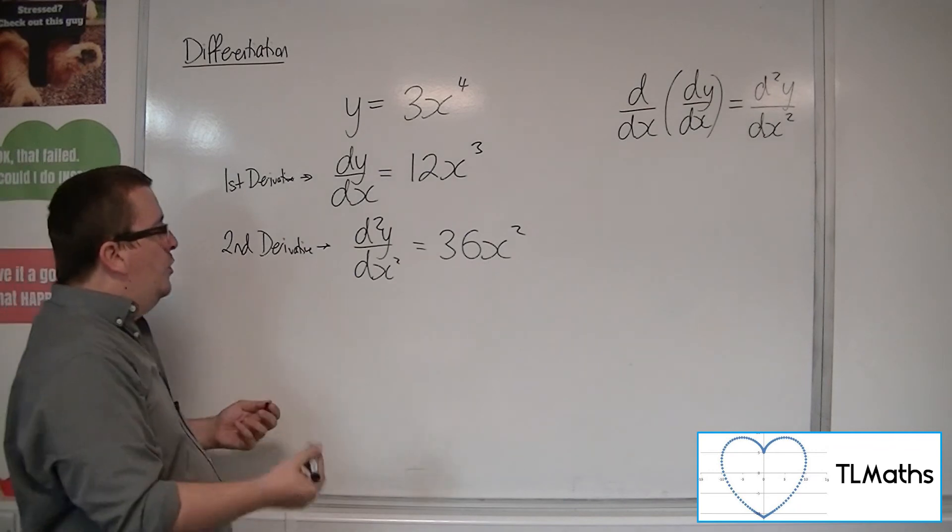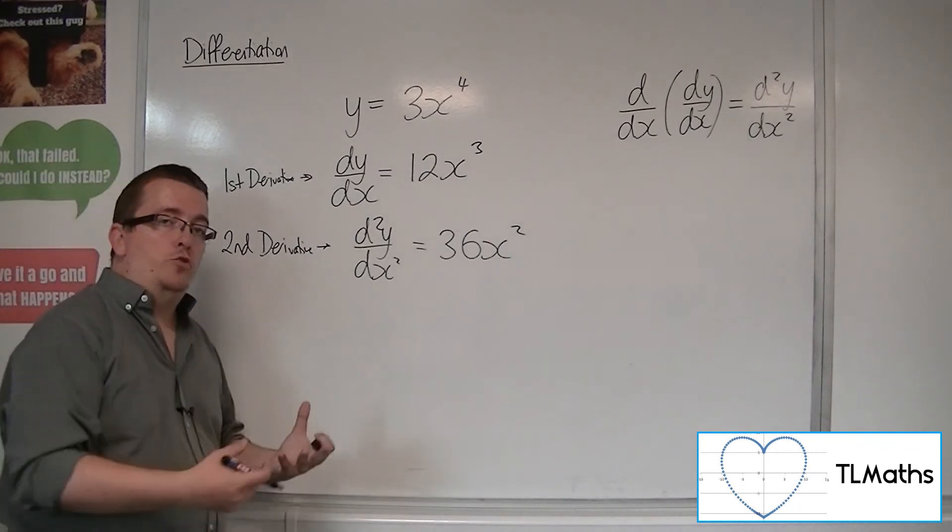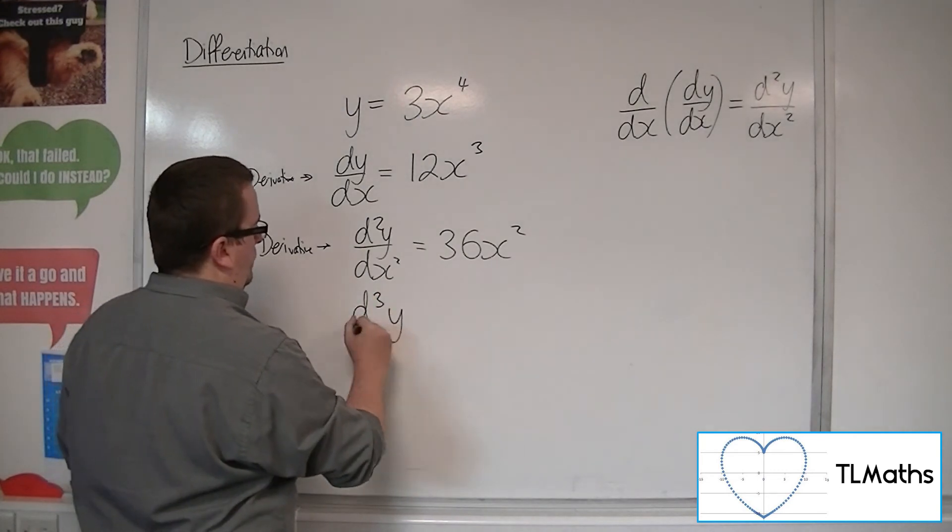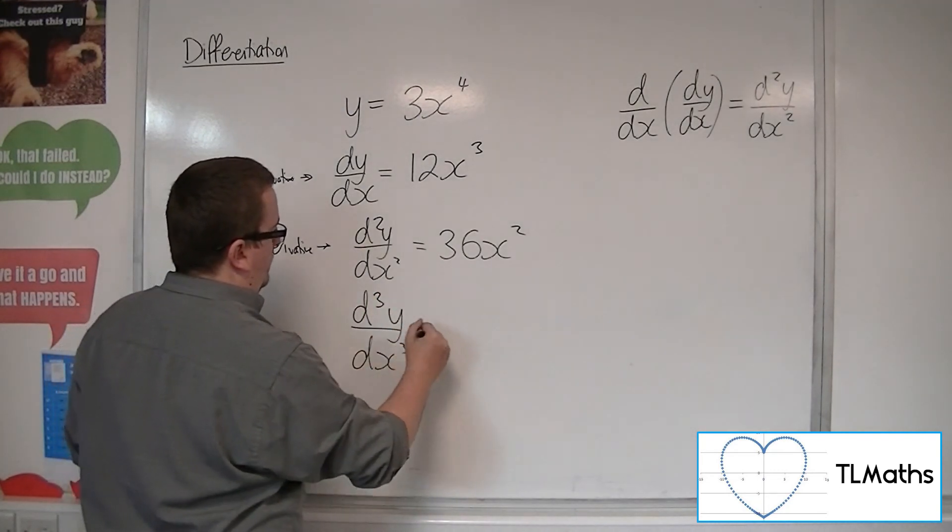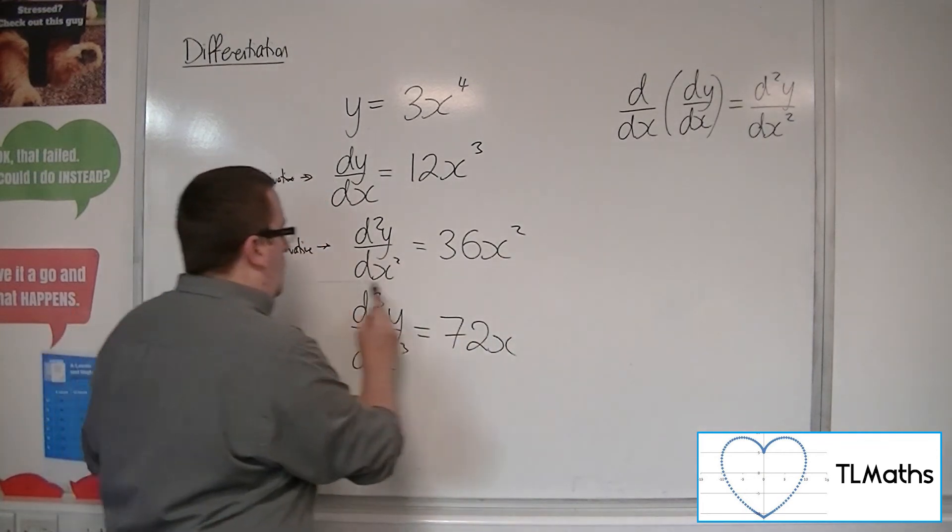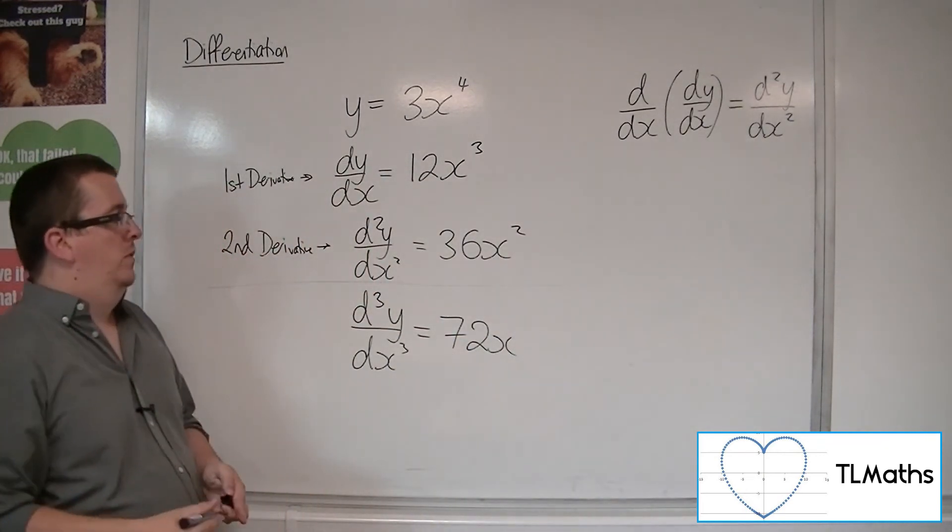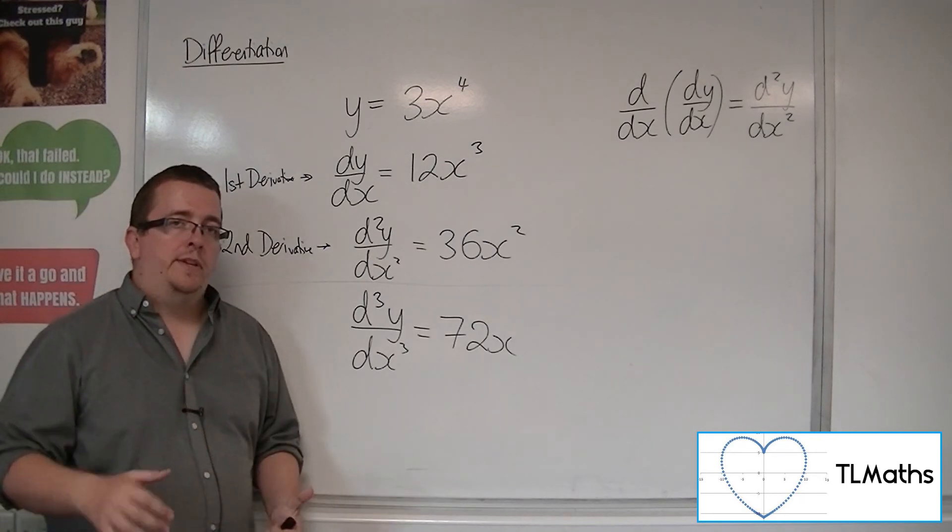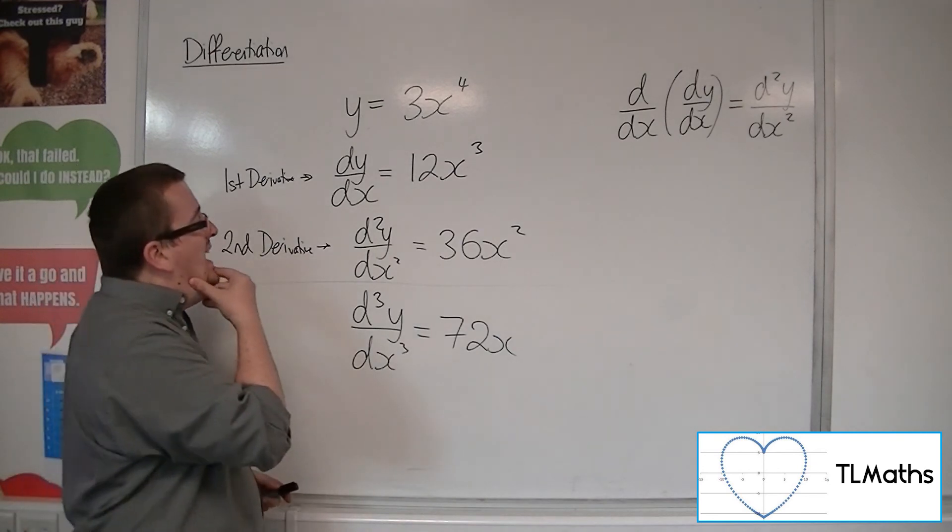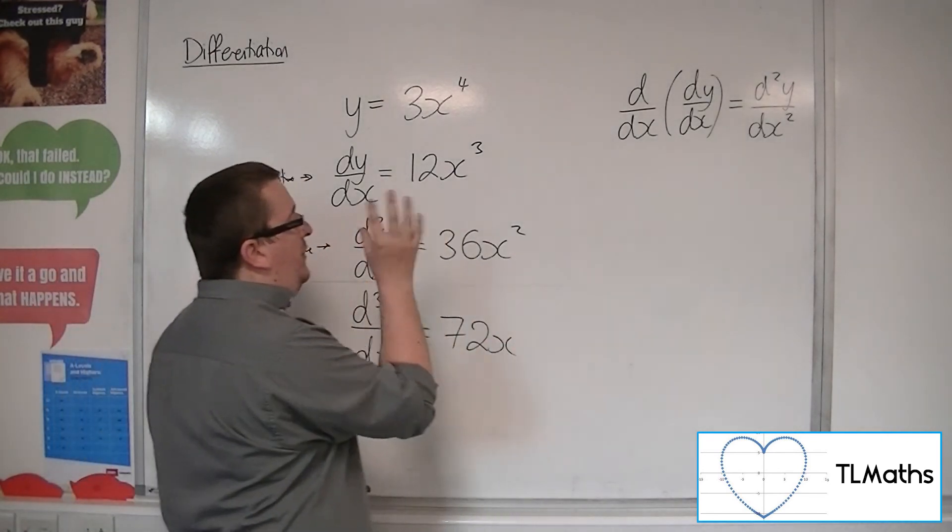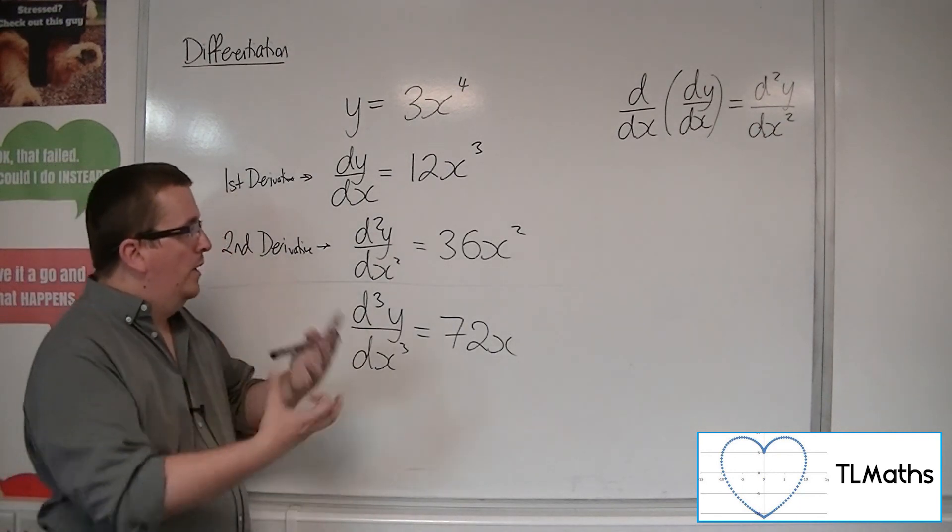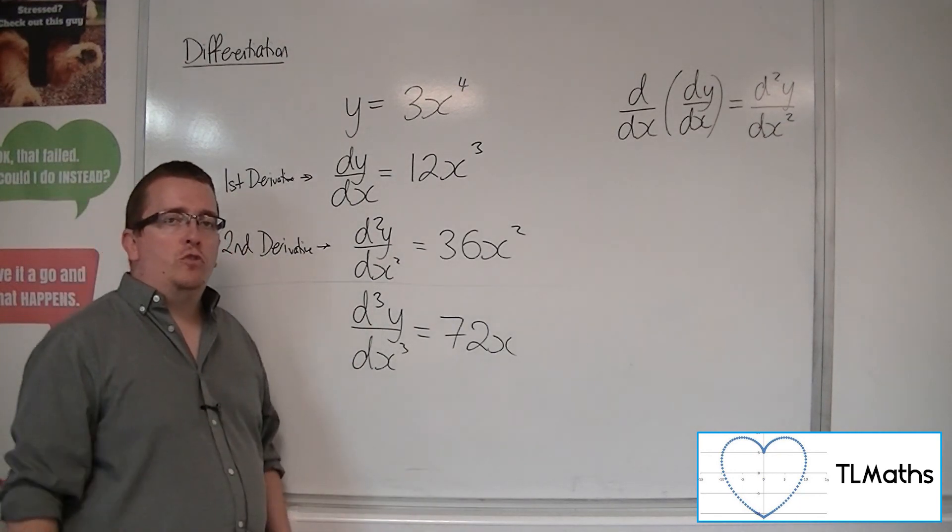So you could then take a third derivative if you wanted to. So that would be 72x. But we only need to go as far as the second derivative for this course. So you don't need to go any further. And we're going to have a look at how we can graph the second derivative based upon the original graph and see how it relates to the original problem.